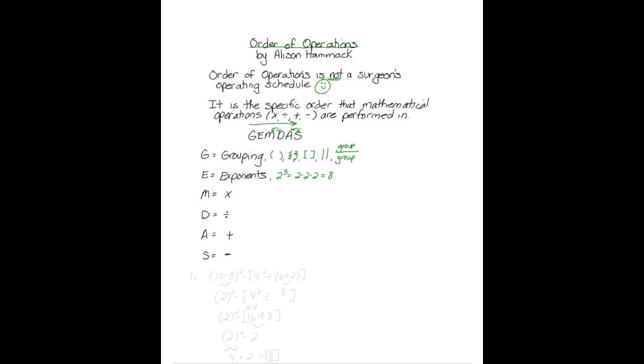We will now do some example problems. Number 1: 10 minus 8 squared times 4 squared divided by 6 plus 2. The first thing we need to do here is do our grouping. 10 minus 8 is 2, 6 plus 2 is 8.